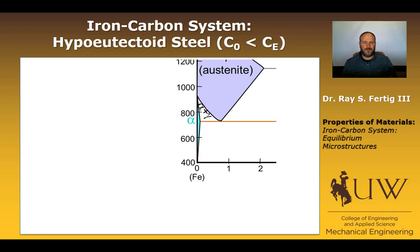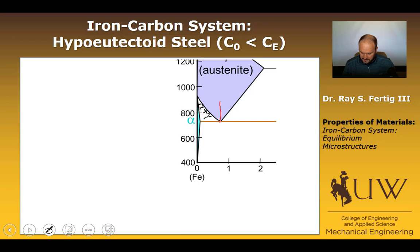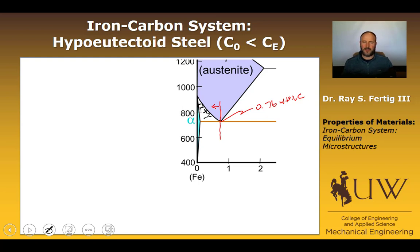Now let's look at the hypo-eutectoid microstructures. Remember, hypo means less than — so we're talking about a composition less than the eutectoid composition of 0.76 weight percent carbon. Anything to the left of the eutectoid point on the phase diagram is hypo-eutectoid. We'll take an example starting at 1000 degrees C at some composition less than the eutectoid and cool it down to just below the eutectoid temperature of 727 degrees C.